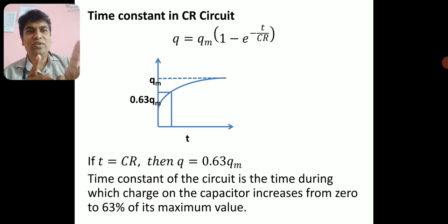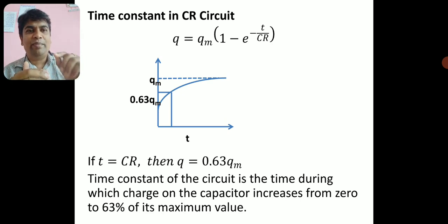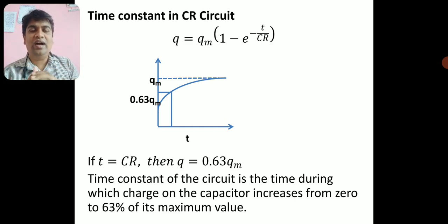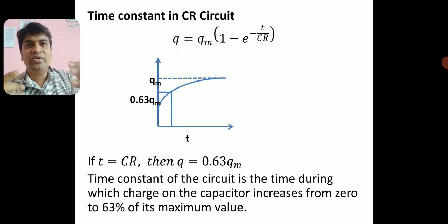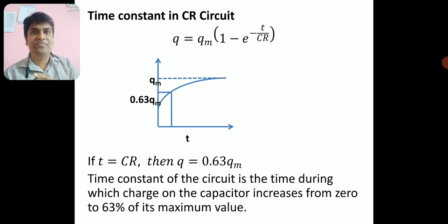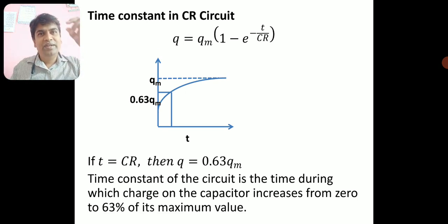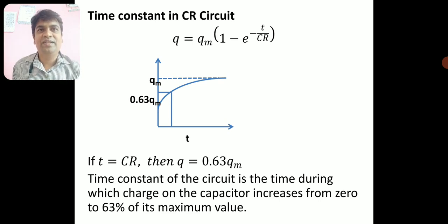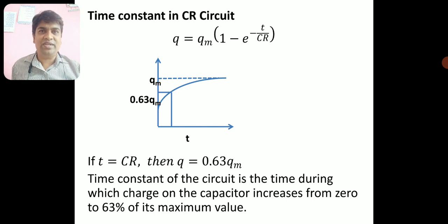You can define the time constant either way: the charge increases from 0 to 0.63 times the maximum value, or from 0 to 63% of its maximum value. Be careful with sentence formation — if you use 0.63, say '0.63 times the maximum value'; if you use 63%, say '63% of its maximum value.' This completes the derivation of charging in the CR circuit.